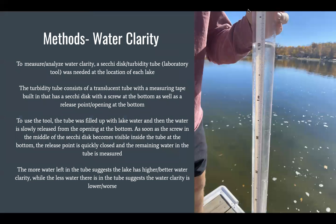Our second method of analyzing water quality was water clarity. To measure this, a Secchi disk or turbidity tube is needed. To use the tool, the tube is filled with water and the water is slowly released from an opening at the bottom. As soon as the screw at the bottom is visible, the opening is quickly closed and the water left is measured. More water left in the tube suggests higher water clarity, while less water in the tube suggests lower water clarity.